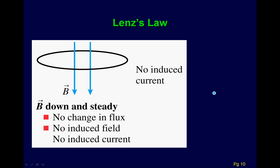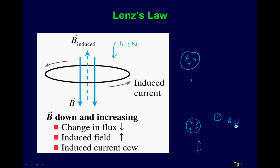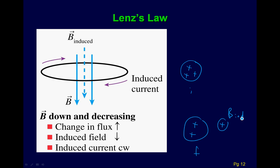It's down and steady — no change, nothing happens. In the down-and-increasing case, we take the top-down view: it's downward, so you see the tail of the arrows. If it's increasing, the final case has four of those, so I want my induced B field out of the page. My thumb comes out to cancel that extra one, giving a counterclockwise current. For down and decreasing, there are maybe three into the page initially and only two in the final, so the induced B field goes into the page and the current is clockwise.